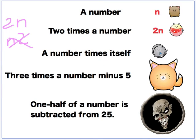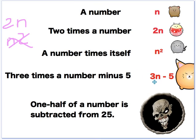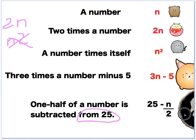So a number times itself could be written two ways, it could be n times n or n squared. 3 times a number minus 5, we've got 3n minus 5. And finally, one half of a number is subtracted from 25. So you see that word from, as soon as you see the word from, it means that we're starting with 25, that's what we've got. And we're taking away the rest of that from 25, so you should see 25 should be first minus n over 2, or one half of a number.